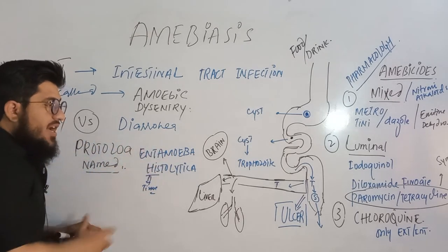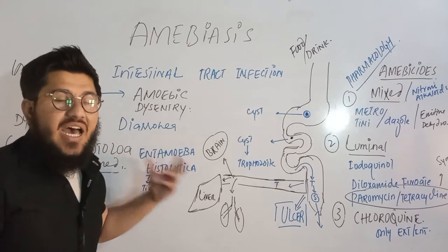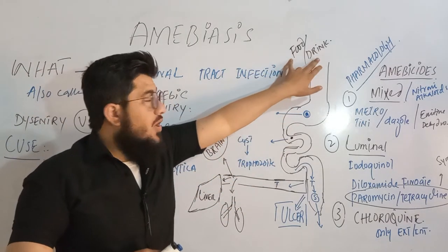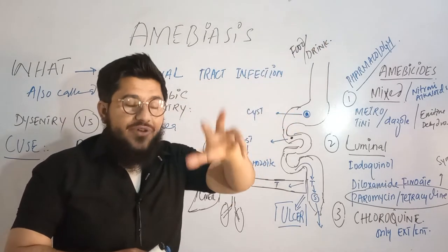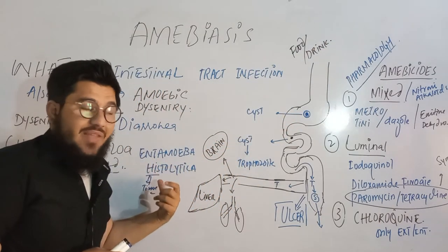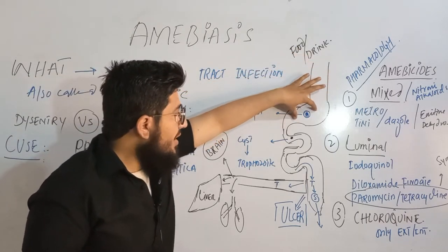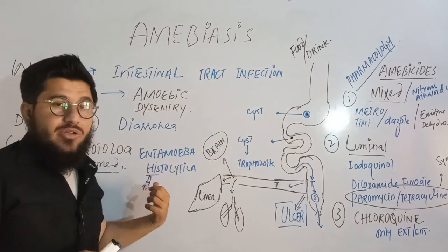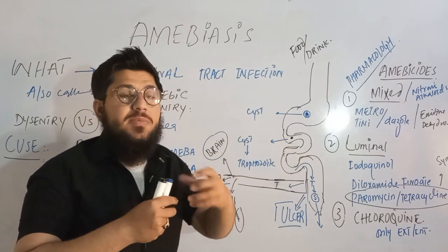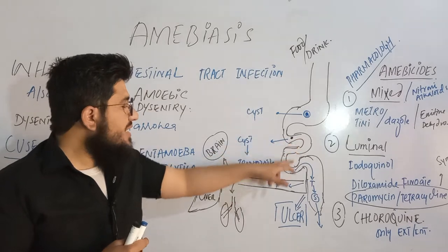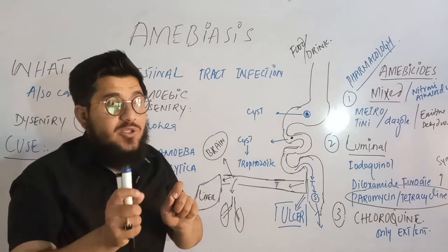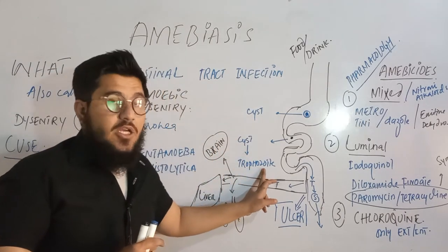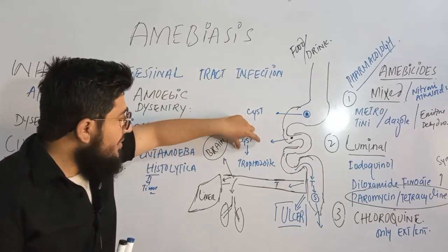Now let's look at how Entamoeba histolytica infects the intestine and causes lysis of intestinal tissues. The food and drinks that you consume, if they contain Entamoeba histolytica, it will enter through your mouth and move towards the stomach. As it reaches the small intestine, this cyst — which is actually the Entamoeba histolytica — will start preparing itself for multiplication. As it reaches the large intestine, multiple copies are synthesized. These multiple copies are mobile and are named trophozoites. So the cyst is converted into trophozoites.